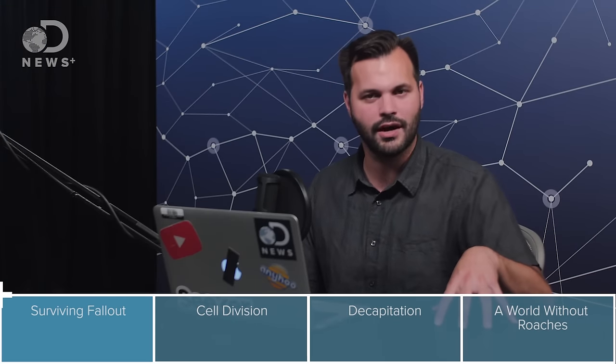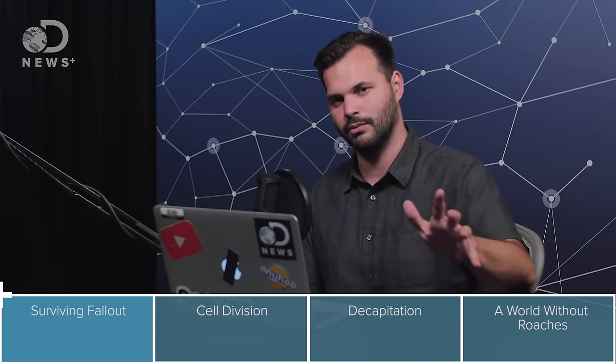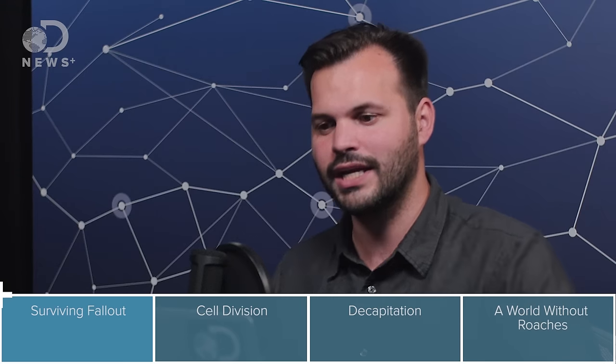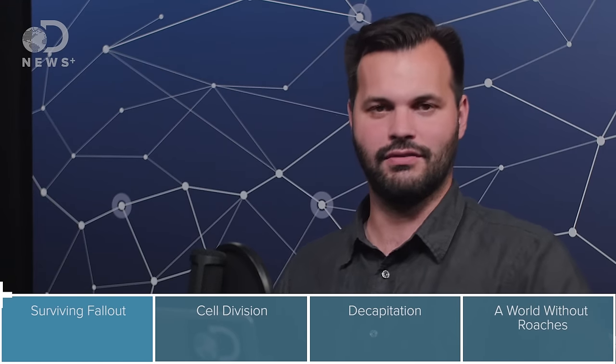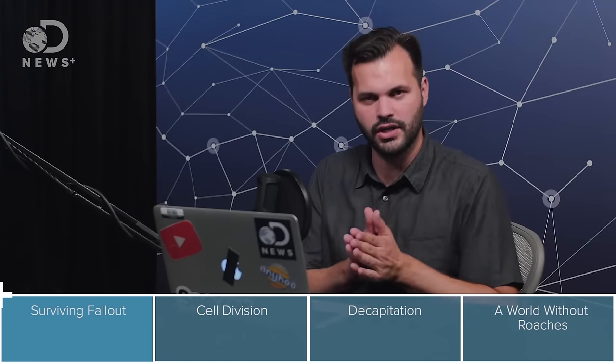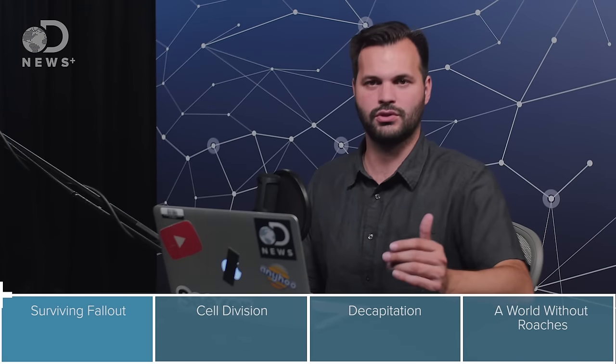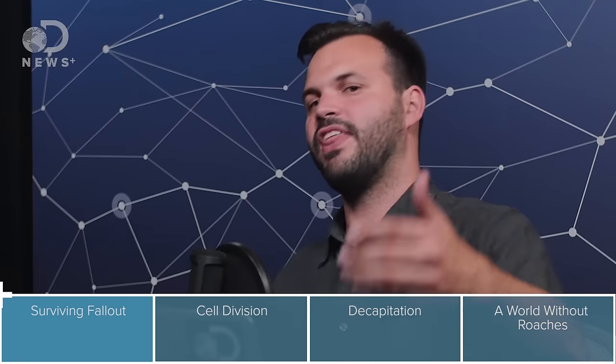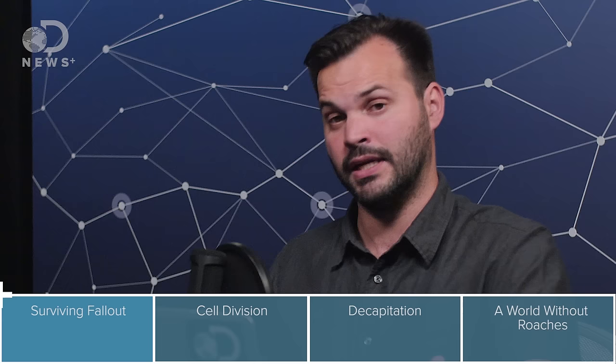The team took the most common cockroach that humans interact with, the Blatella Germanica, the German cockroach, and they subjected them to three varying levels of radioactive metals, cobalt-60 specifically. They started by exposing them to a thousand rads, or a thousand radon units, of cobalt-60. To put it in perspective, that amount of radiation would kill a human in about 10 minutes.